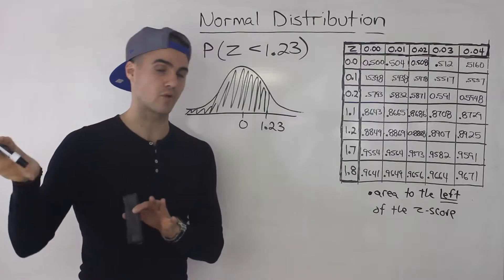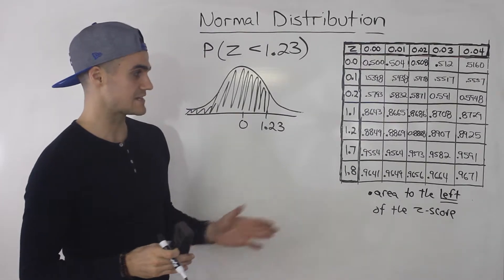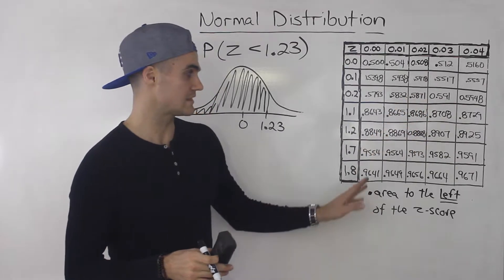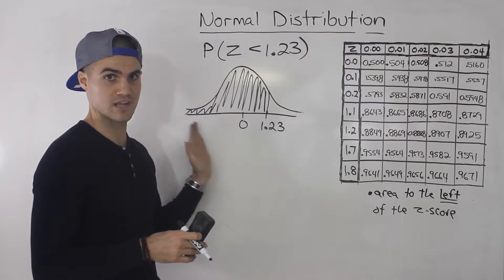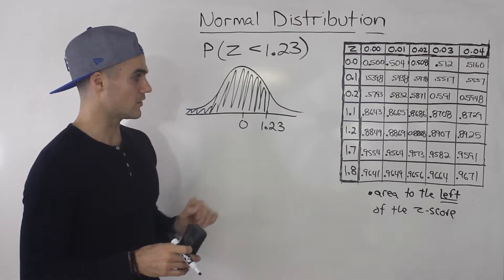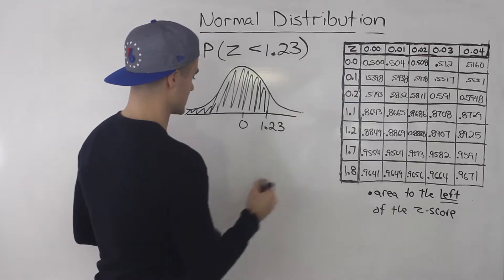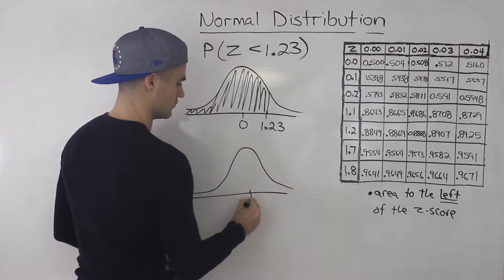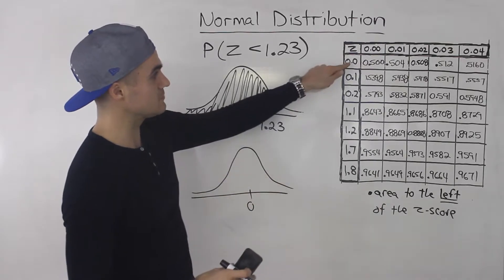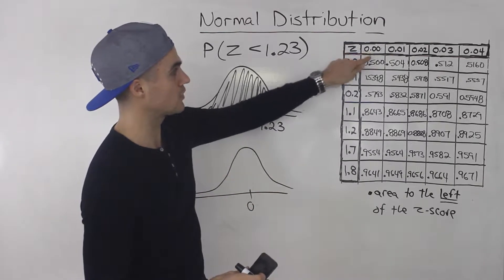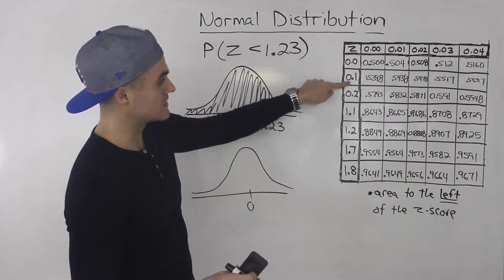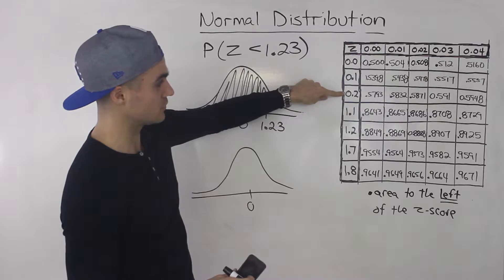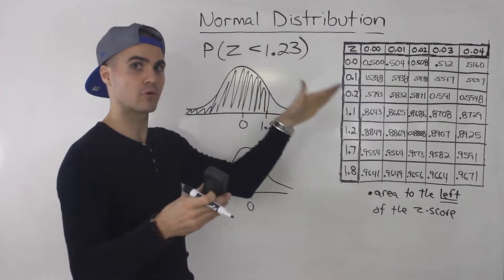Sometimes you have tables that give it to you to the right, but most z-tables — these probabilities represent the area or the probability to the left of a certain z-score. The easiest one to look at in this table is zero, a z-score of zero. Notice that's going to be zero and zero over here, because these are decimals going up by tenths: 0.1, 0.2, 0.3, 0.4.